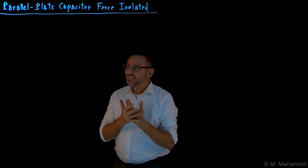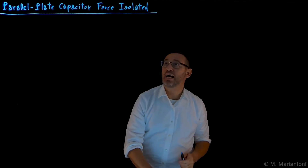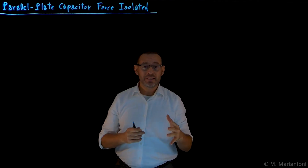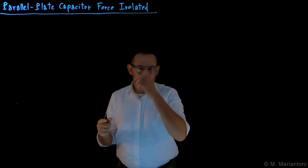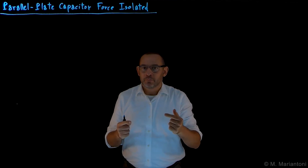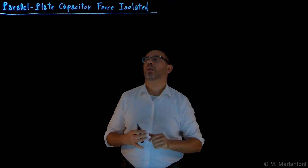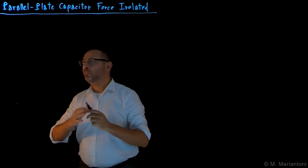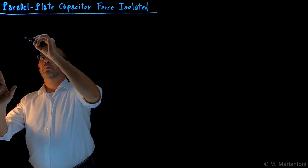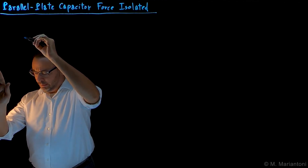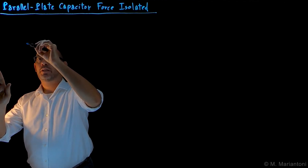So let's sketch our parallel plate capacitor. I remind you that 'Isolated' means the charge of the system will be constant, not the potential — the charge. So we have the first plate of our capacitor like this here.